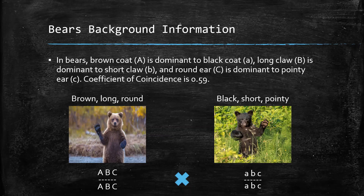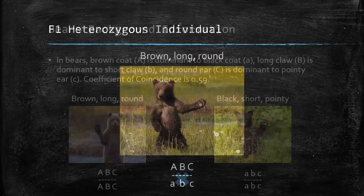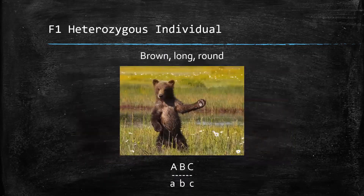As you can see, we have a homozygous dominant parent who has a brown coat, long claws, and round ears, and we also have a homozygous recessive parent who has a black coat, short claws, and pointy ears. These two bears mate with each other and produce our F1 heterozygous bear cub, which has a phenotype of a brown coat, long claws, and round ears.